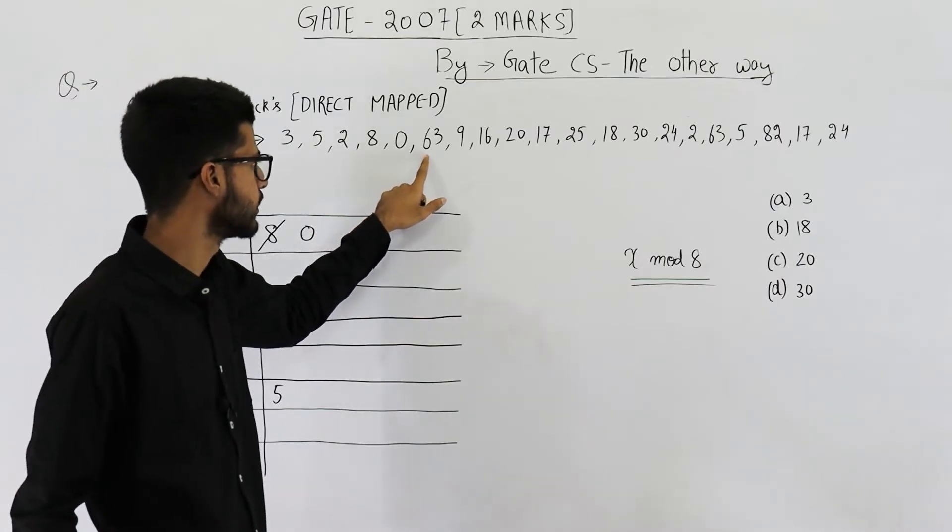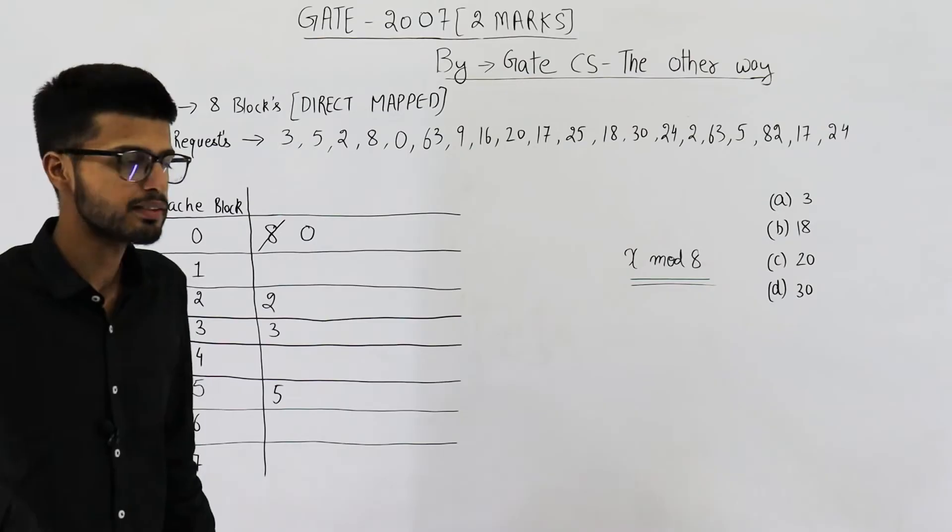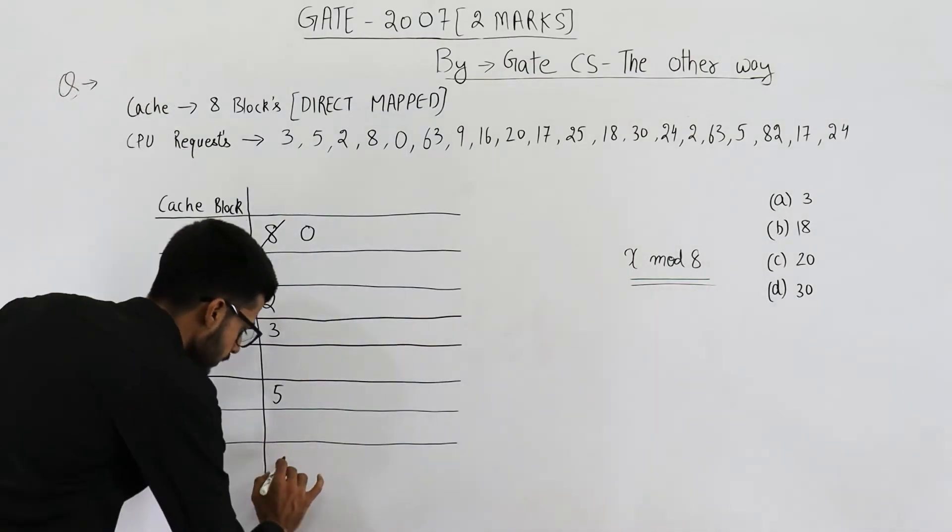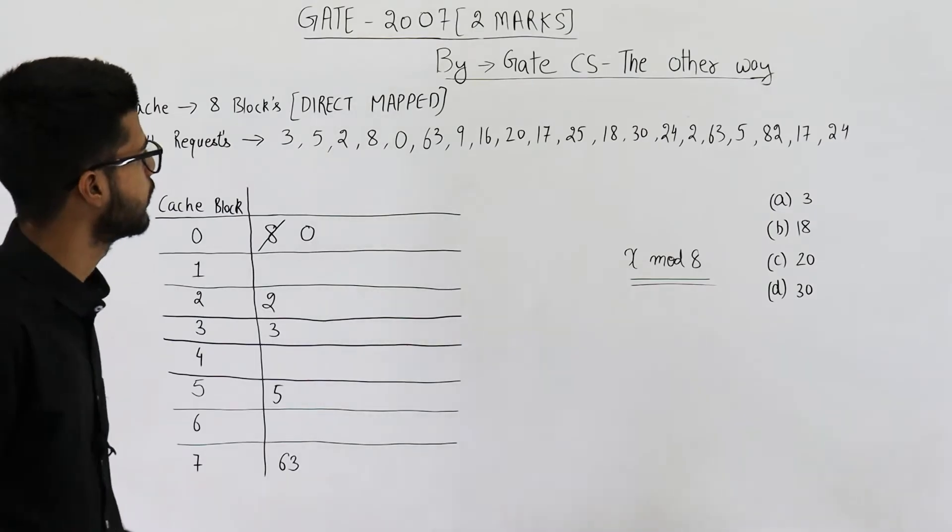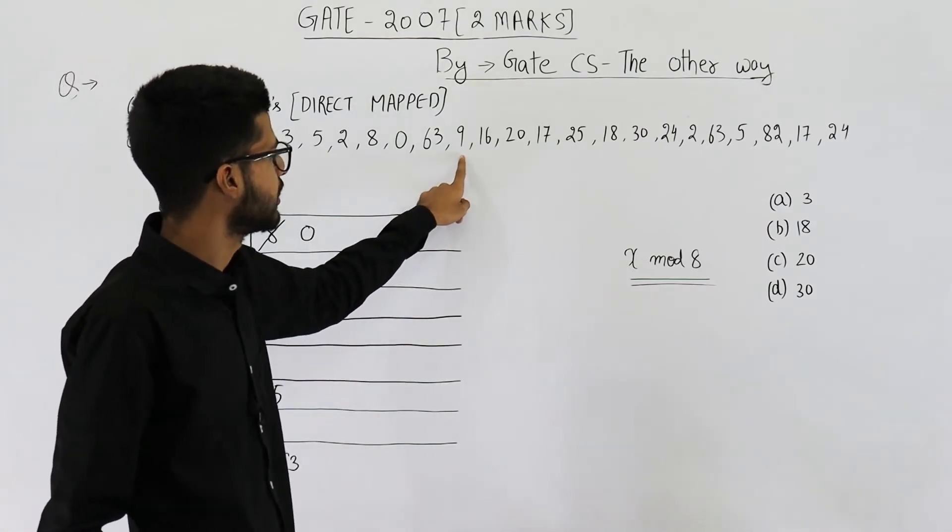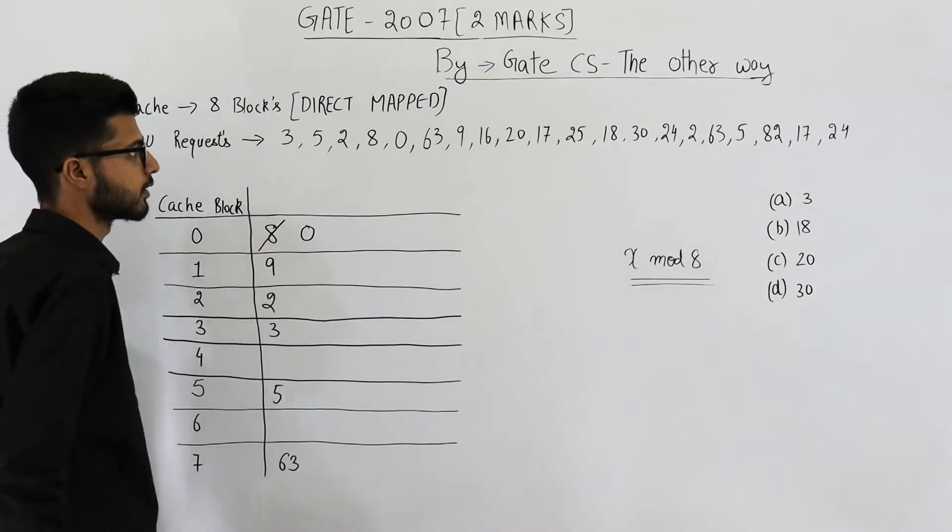Next one is 63, 63 mod 8 is 7. So 63 will go here in the 7th cache block. Then you have 9, 9 mod 8 is 1. So 9 will be placed here.